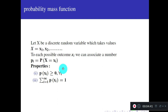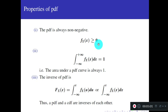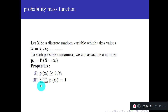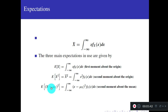The PMF satisfies two properties: first, P(x_i) ≥ 0 — all probability values are non-negative. Second, summation from i = 1 to infinity of P(x_i) = 1. Recall the analogous properties for continuous random variables: f_X(x) ≥ 0 and integral from minus infinity to infinity of f_X(x) dx = 1. For continuous random variables we use integration; for discrete random variables we use summation.